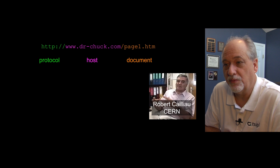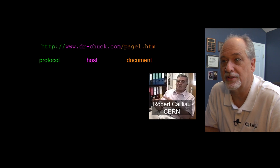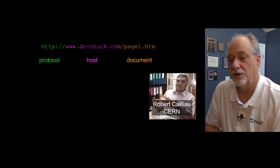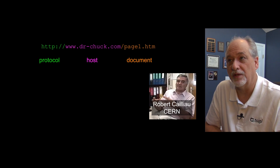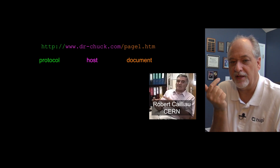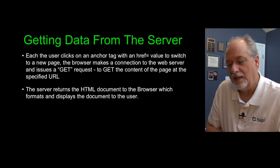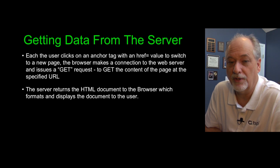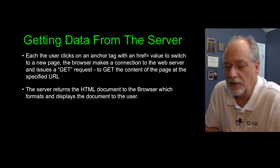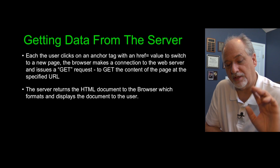If you look at a typical URL, this is one of the things that web innovators in 1990 really invented — it seems second nature today, but back then it was rather revolutionary. These Uniform Resource Locators included in themselves a protocol, the host to connect to, and the document to retrieve. HTTP is a really simple protocol invented in 1989 and 1990 by Tim Berners-Lee and Robert Caillieu at CERN, and we've grown to use it for way more than just retrieving documents.